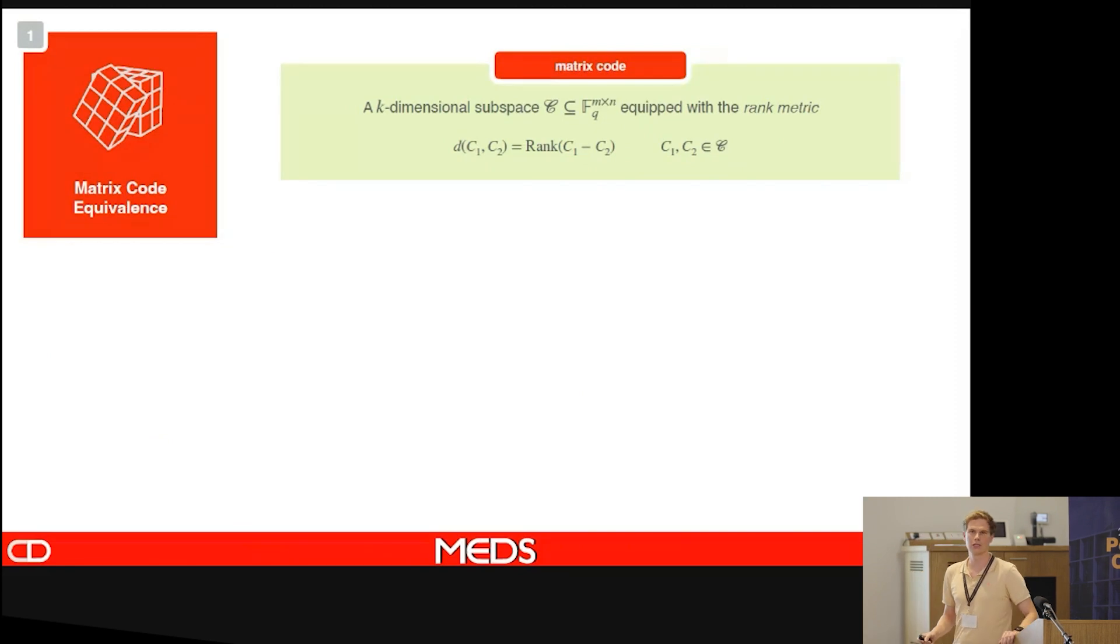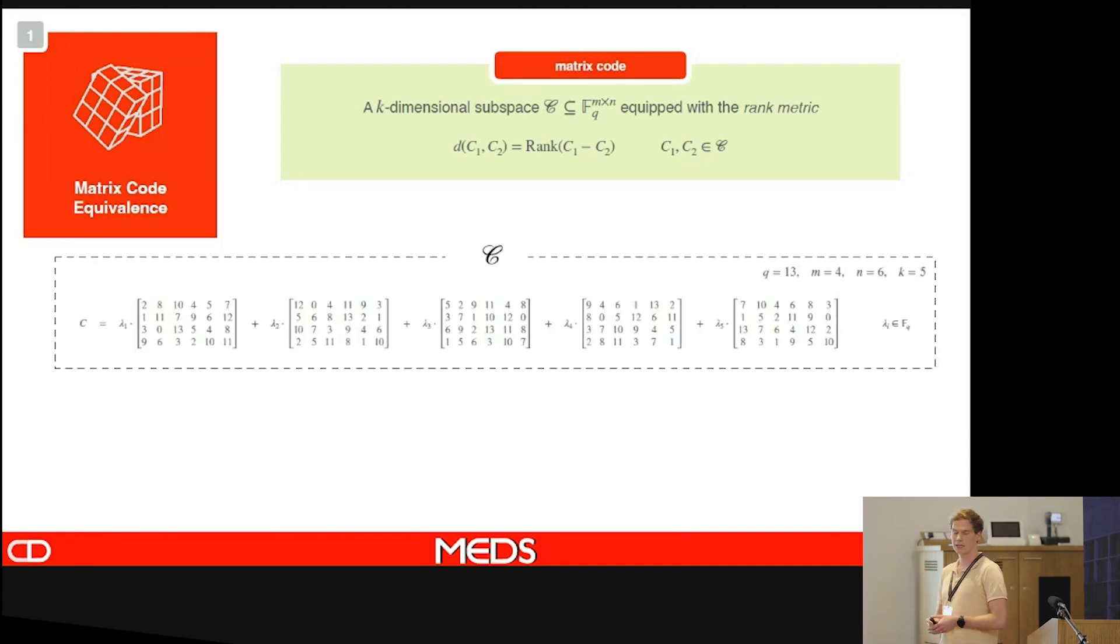To talk about Matrix Code Equivalents, we have two main actors. The first actor is Matrix Codes, the objects, and the other one are the isometries, the equivalences. A Matrix Code is a k-dimensional subspace equipped with the rank metric. The metric is given simply by the rank of the matrices, and we're considering n-by-n matrices. For example, here is a five-dimensional code with matrices from six-by-four dimensions.